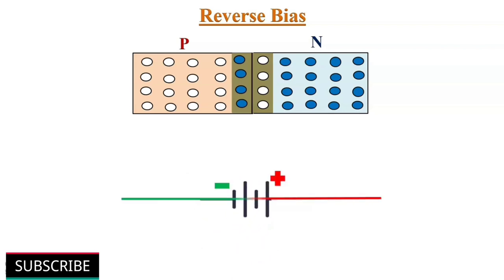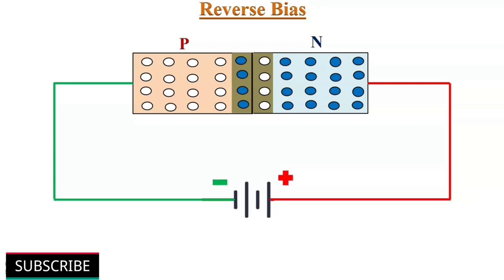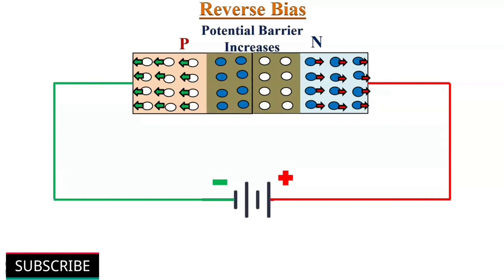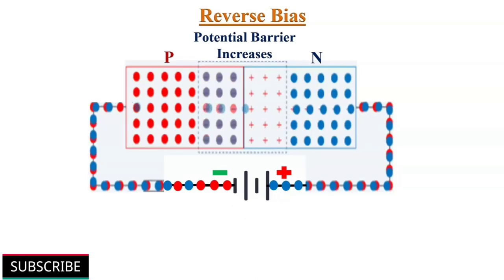Reverse bias: the p-type is connected to the negative terminal while the n-type is connected to the positive terminal of the external supply voltage. These results in holes being attracted towards the negative terminal and electrons being attracted towards the positive terminal. This causes an increase in potential barrier. So the diode acts as an insulator. Practically, no current flows through the junction diode. However, a very small microamperes reverse leakage current does flow through the junction due to minority charge carriers.